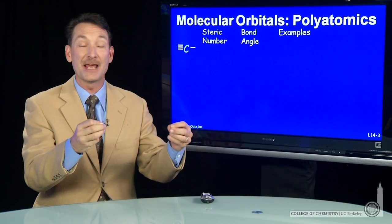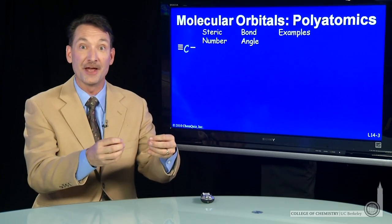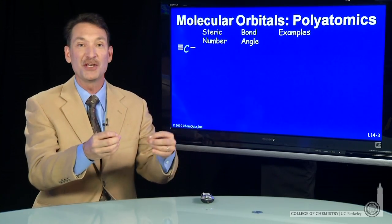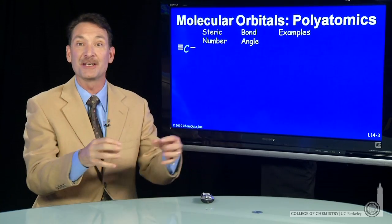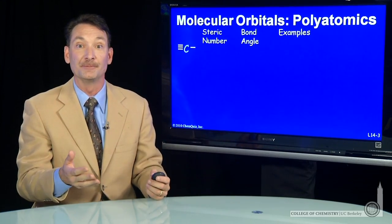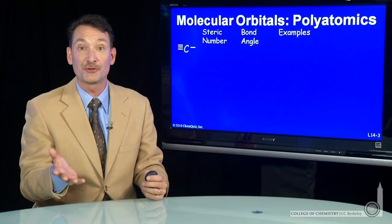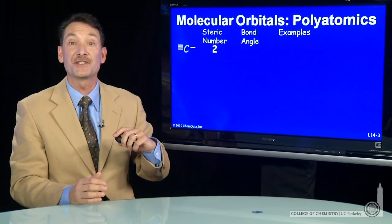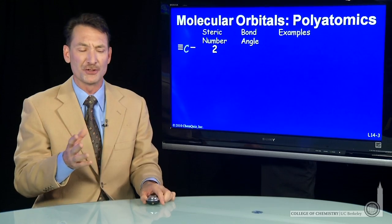We can take s and p orbitals and overlap them to form molecular orbitals. The s and p orbitals have the appropriate arrangement and symmetry for a diatomic molecule. But what if we get more complicated? Even with a simple triatomic or something with steric number 2, how do we accommodate steric number 2?